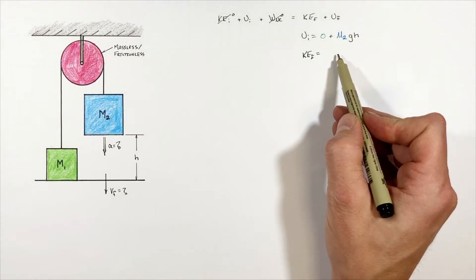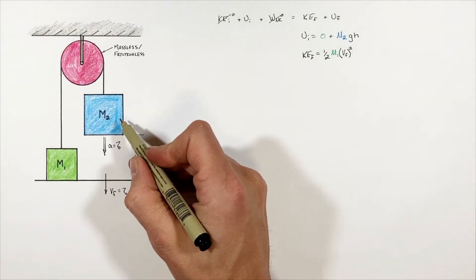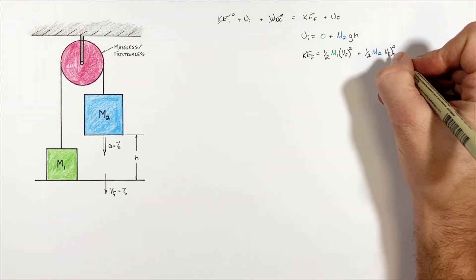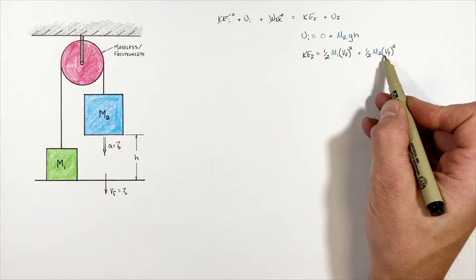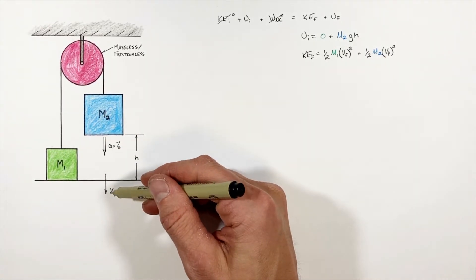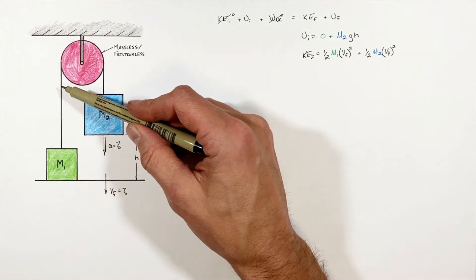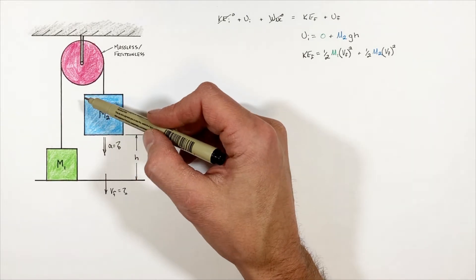So our final kinetic energy is going to be given by the kinetic energy of this block plus the kinetic energy of this block. And I want you to realize these two final velocities are in fact the same term. If this block over here is moving down at some final velocity, this block must be moving up at the same final velocity. Otherwise the string would have to get either shorter or longer.